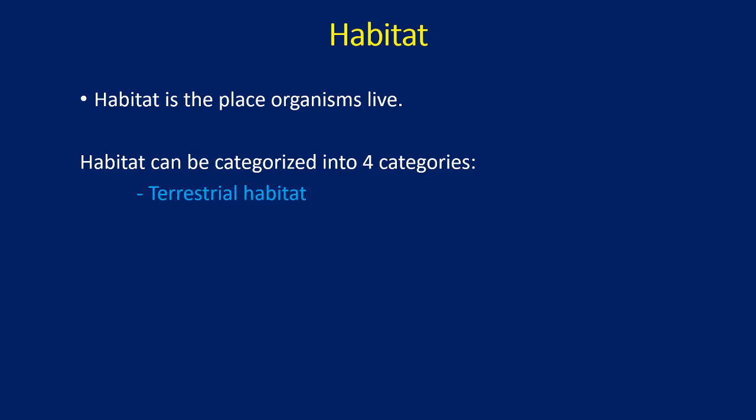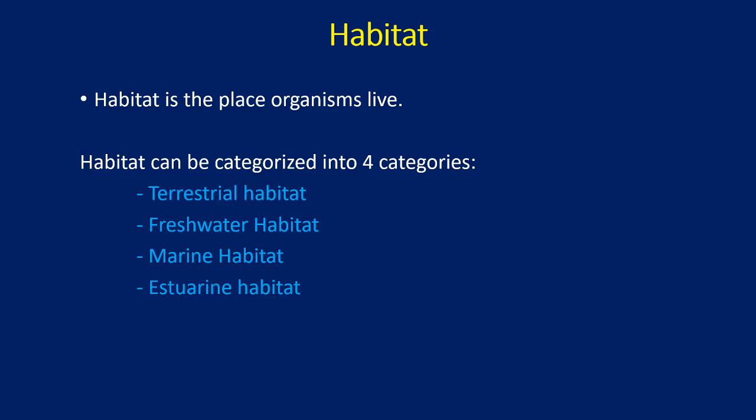The first one is the terrestrial habitat, which is nothing but organisms living on the land. Then you have freshwater habitat, which includes organisms, plants and animals which live in freshwater. The third one is the marine habitat, where organisms such as fishes, mammals, plants, and algae which live in seawater. And the fourth one is the estuarine habitat.